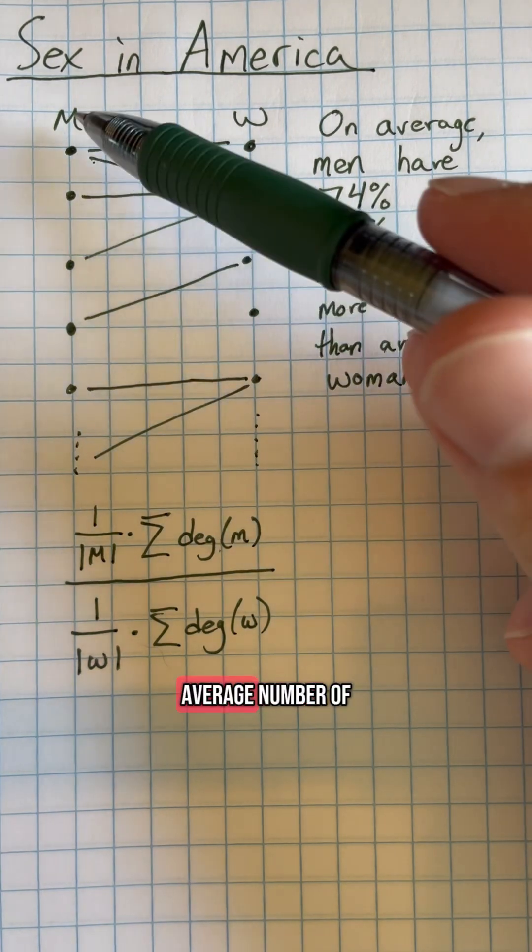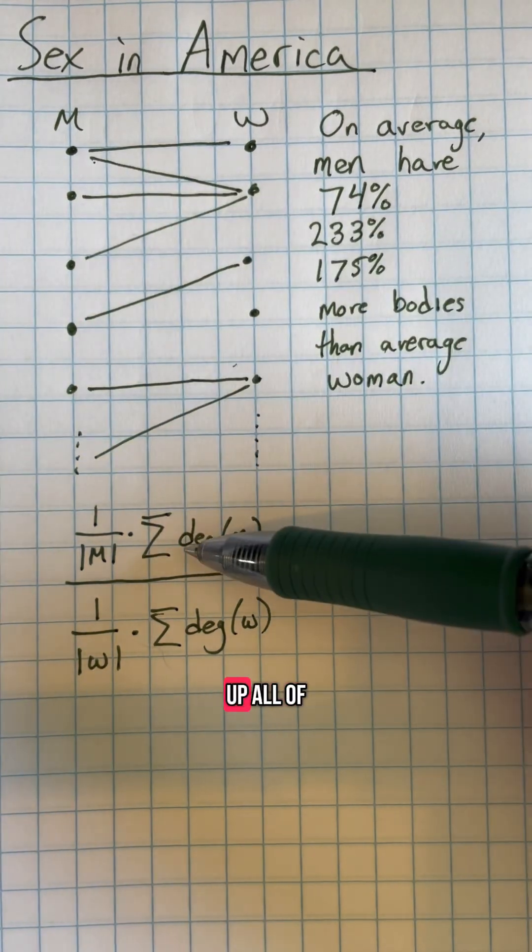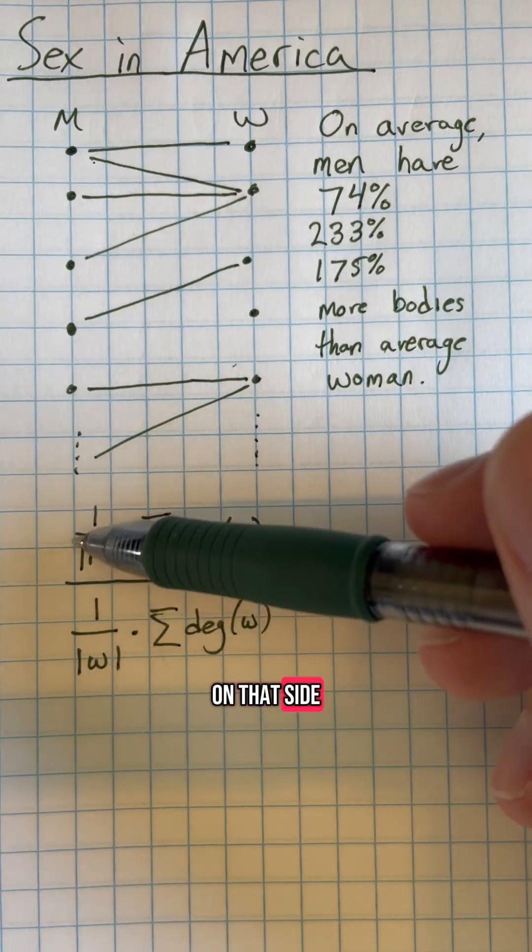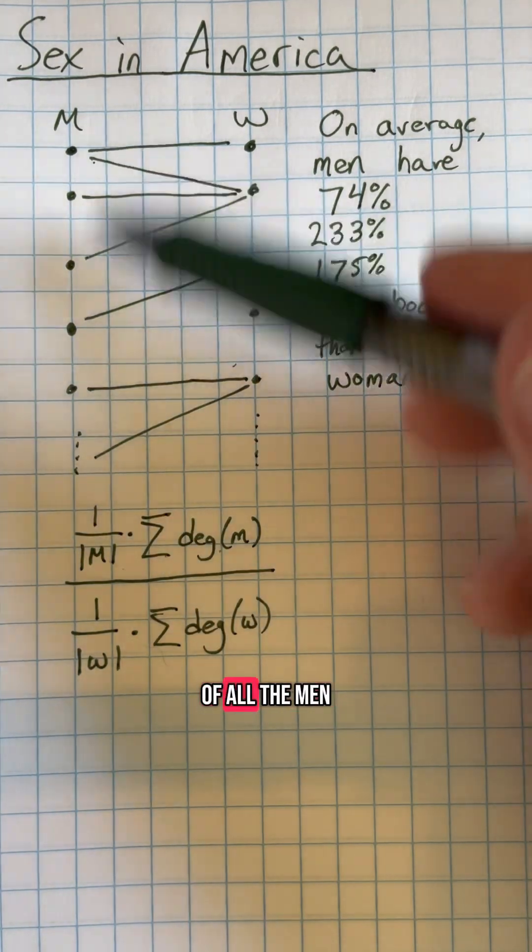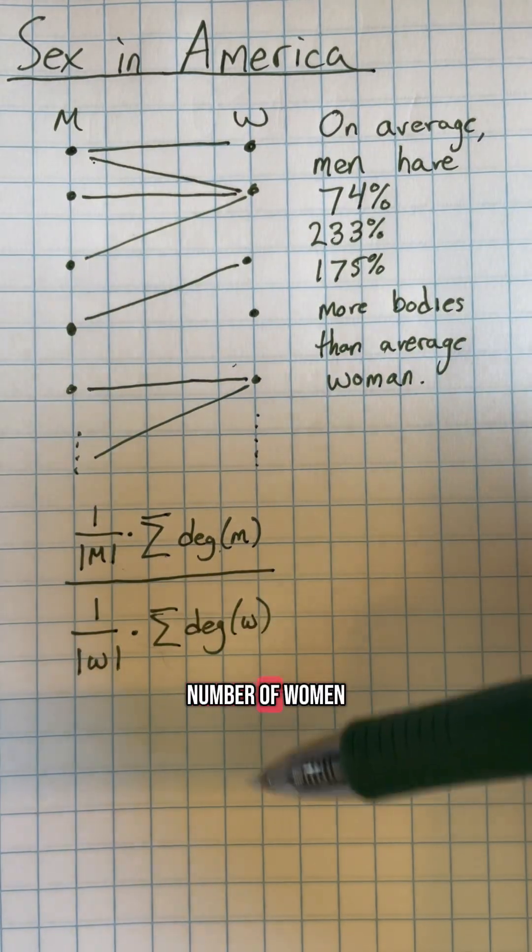To find the average number of sexual partners on each side of the graph, we sum up all the degrees and divide by the total number of nodes on that side. This would be the sum of the degrees of all the men divided by the number of men, and for the women, the sum of all the degrees of all the women divided by the number of women.